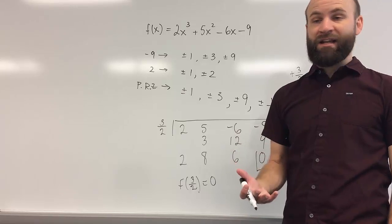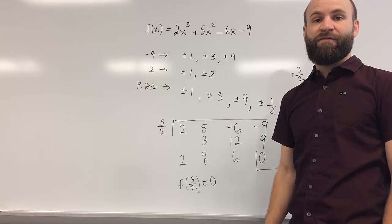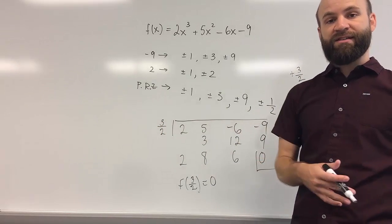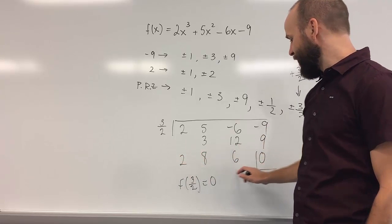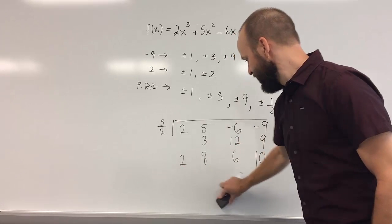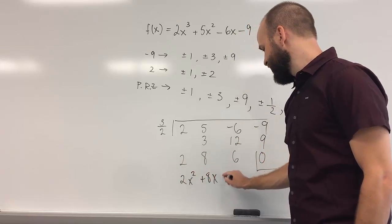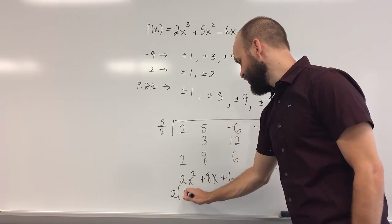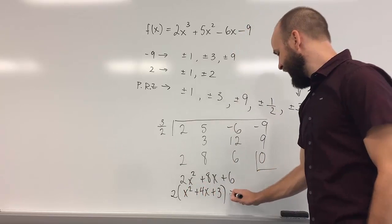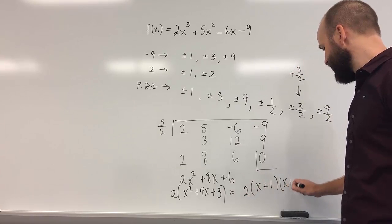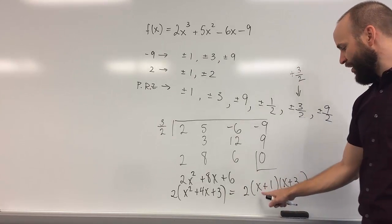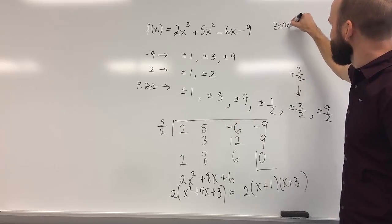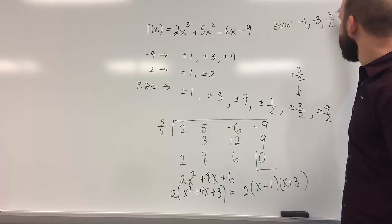Without that idea, we probably would have tried a couple other numbers that weren't zeros before finding the first one. Now we just need to factor out the remaining quadratic: 2x² + 8x + 6. We factor out a 2, leaving x² + 4x + 3, which factors as 2(x + 1)(x + 3). So the other two zeros are −1 and −3. Including our first zero of 3/2, we have found all three zeros: −1, −3, and 3/2.